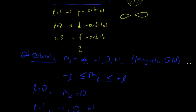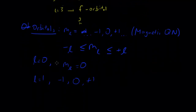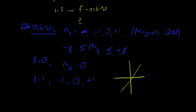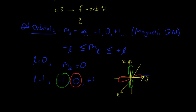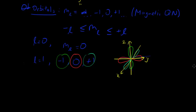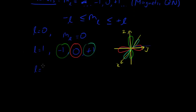The orbitals actually denote the orientation of the orbital in space. For example, if we draw a coordinate plane with x, y, and z axes, the negative 1 orbital lies on the z-axis, the 0 orbital lies on the y-axis, and the plus 1 orbital lies on the x-axis. So that is what the orbital numbers mean — they describe the orientation in space. For L equals 2, M sub L goes from negative 2, negative 1, 0, plus 1, to plus 2.